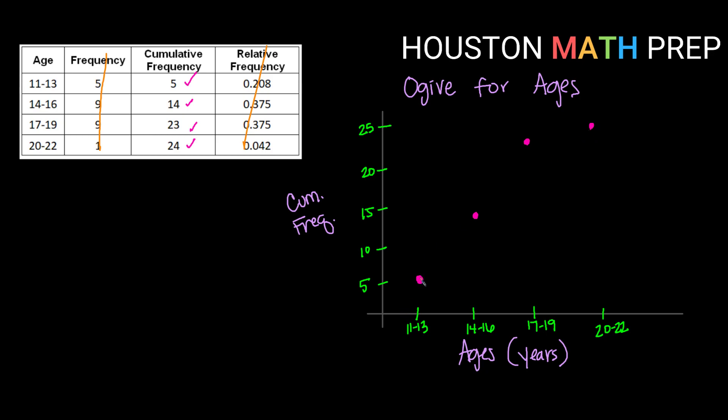Then we can go back and connect each one with as straight of a line as we can manage. And there would be our cumulative frequency polygon, also known as an ogive, for our age data. All right, that does it for this one, catch you in the next video.